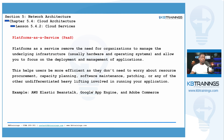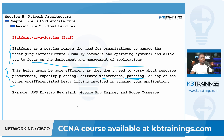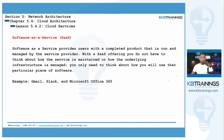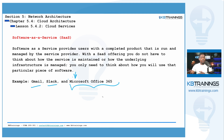Platform as a Service goes beyond hardware, virtualization, and OS — you get a platform where you can just start developing your application, focusing on deployment and management of the app, not patches or anything beyond that. Examples include AWS Elastic Beanstalk, Google App Engine, and Adobe Commerce. Software as a Service is where a whole software is available for you, already fully developed — like Microsoft Office 365, Gmail, Slack, Webex, and Skype. You can use them online without knowing what's running behind them.